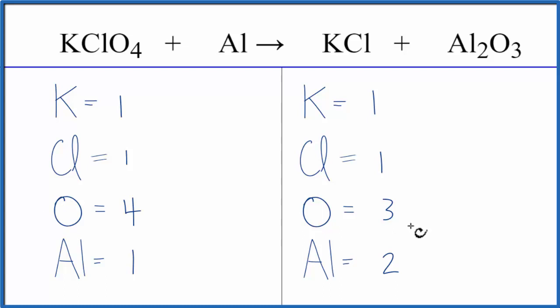So I'm going to do a little trick here. I'm going to flip these numbers. So the three here for the oxygen, I'm going to put that in front of the KClO4, and then the four for the oxygen, I'll put that in front of the aluminum oxide.